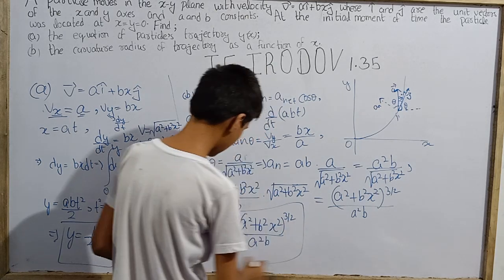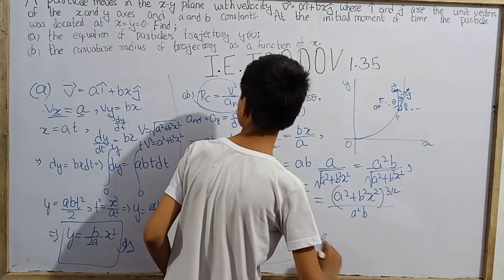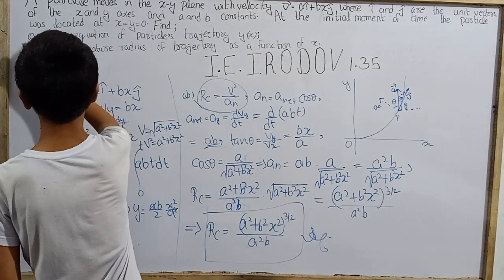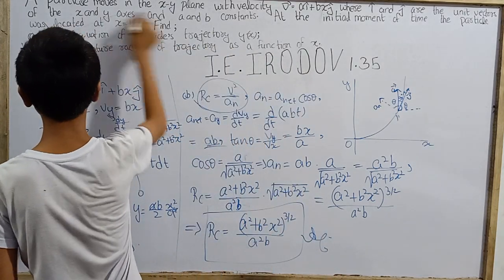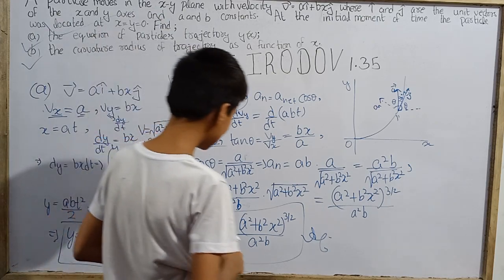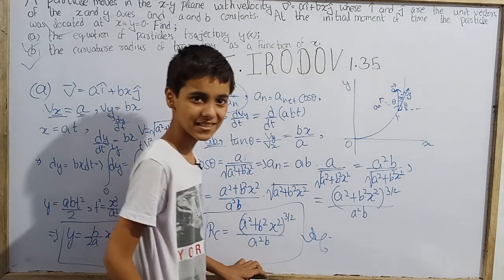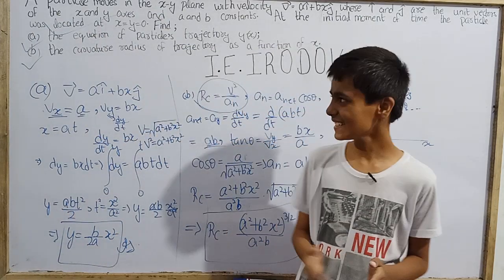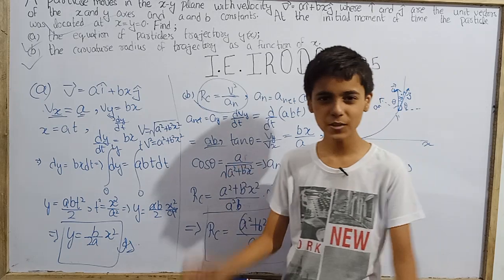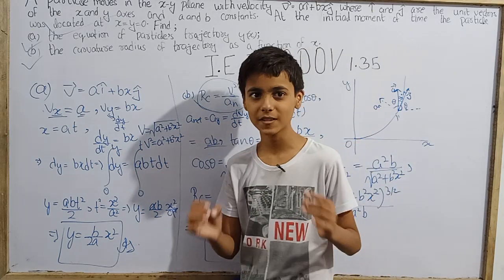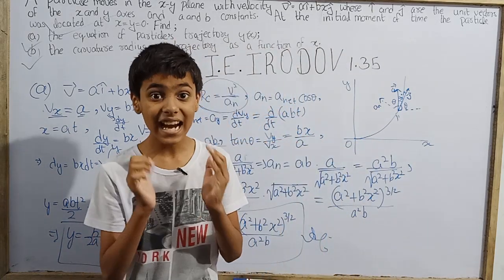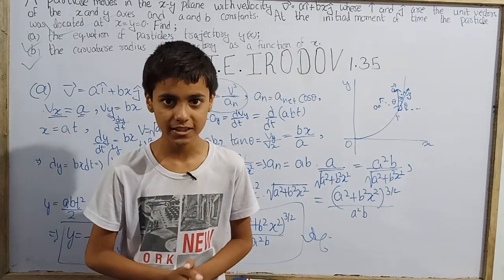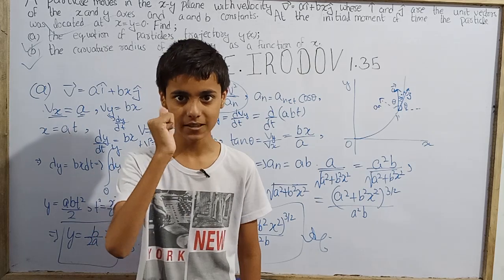The final answer for the radius of curvature is R equals (a² plus b²x²)^(3/2) over a²b. The problem has been solved. That was fun to do, and I think that's all for today. Hope you liked and enjoyed today's video — thanks for watching.